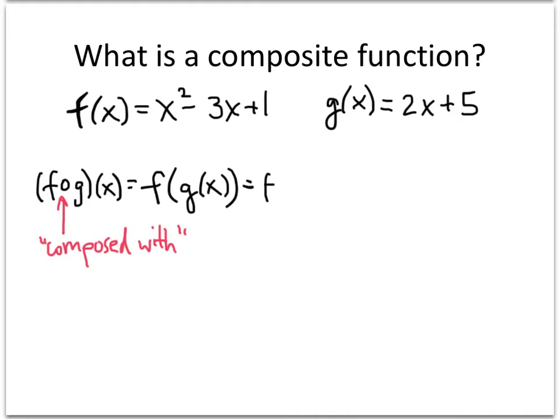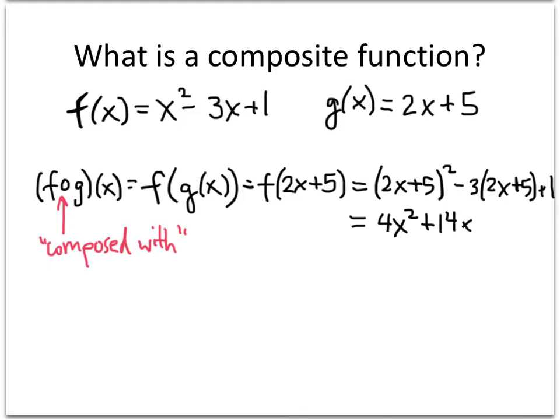That's f of g of x is 2x plus 5. Remember how this works. Everywhere I see an x in the definition of f, this x here and this x here, I'm going to replace those with 2x plus 5. So I'm going to get 2x plus 5 quantity squared minus 3 times the quantity 2x plus 5, and then plus 1. When I work all that out, I've got a bunch of algebra to do there to simplify that, and that's going to work out to be 4x squared plus 14x plus 11.